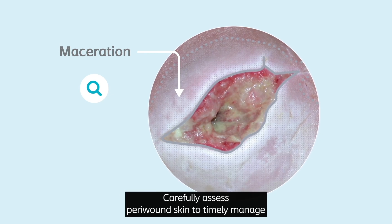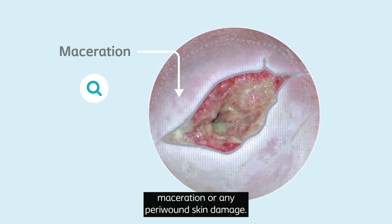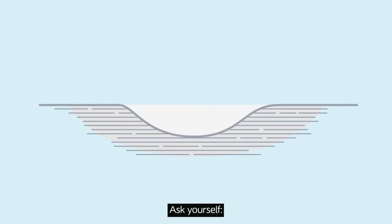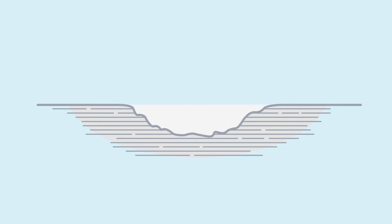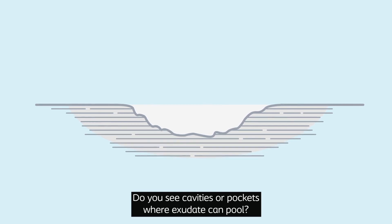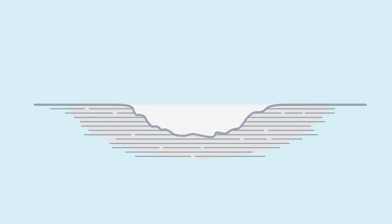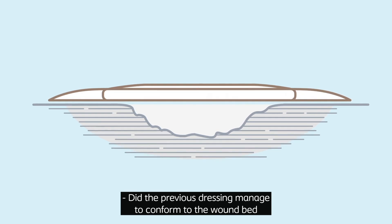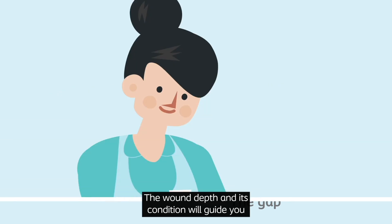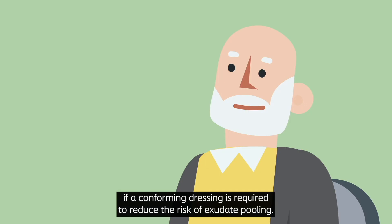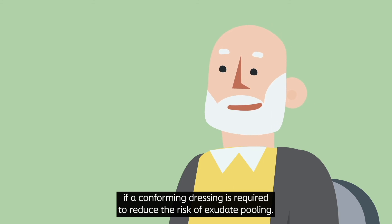Carefully assess peri-wound skin to timely manage maceration or any peri-wound skin damage. Ask yourself: is the wound bed surface irregular? Do you see cavities or pockets where exudate can pool? Did the previous dressing manage to conform to the wound bed and manage the gap? The wound depth and its condition will guide you if a conforming dressing is required to reduce the risk of exudate pooling.